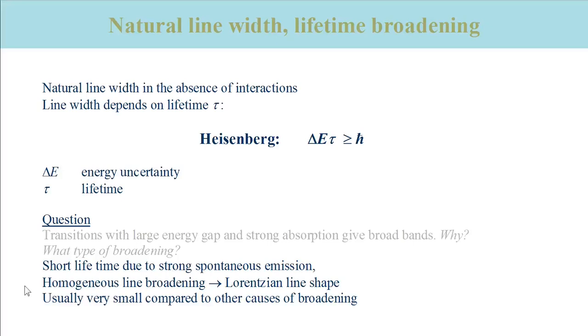Natural line broadening is an example for homogeneous line broadening because the probability for relaxation is the same for all molecules. Thus, all molecules are affected in the same way by the lifetime broadening mechanism. The line width is therefore described by a Lorentzian line shape. Lifetime broadening is usually very small compared to other causes of broadening.